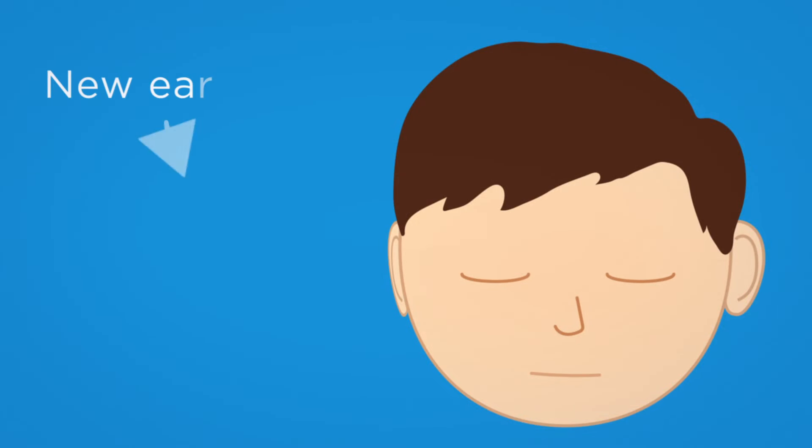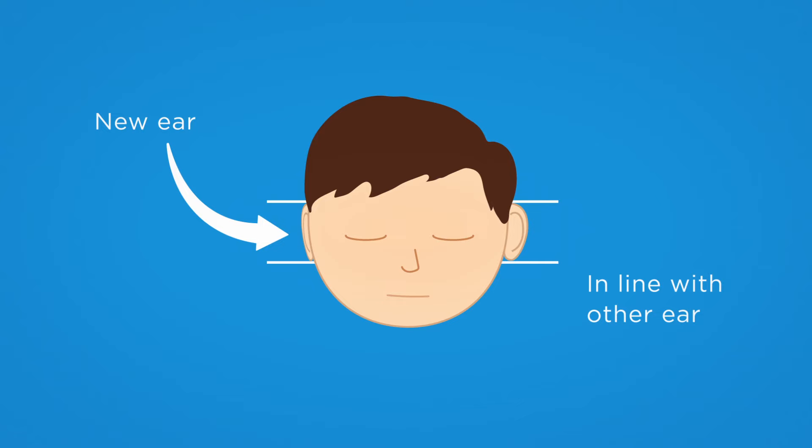The new ear is placed on the side of the head, underneath the skin, in line with the other ear.